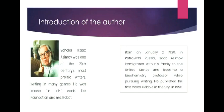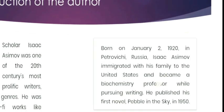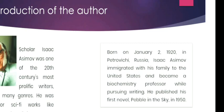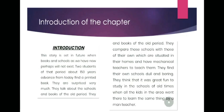Regarding his personal life, Isaac Asimov was born on 2nd January 1920 in Petrovichi, Russia. He immigrated with his family to the United States and became a biochemistry professor, so he was a science student as well. Meanwhile, he continued writing, and his first novel was published in 1950. The name of that novel was Pebble in the Sky.